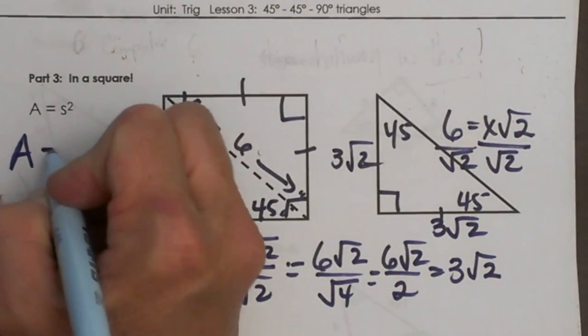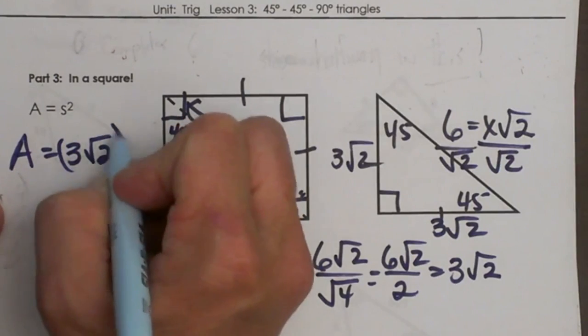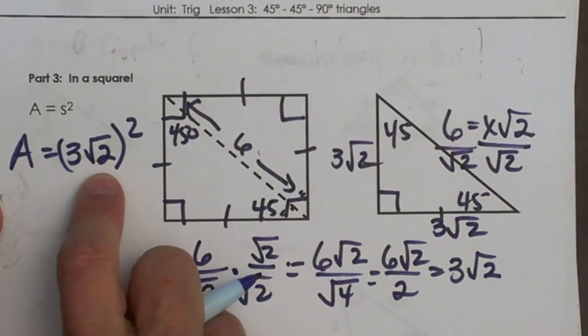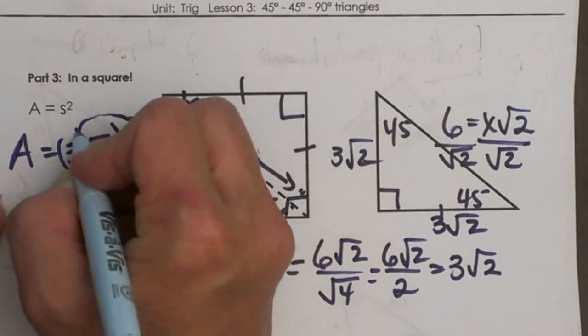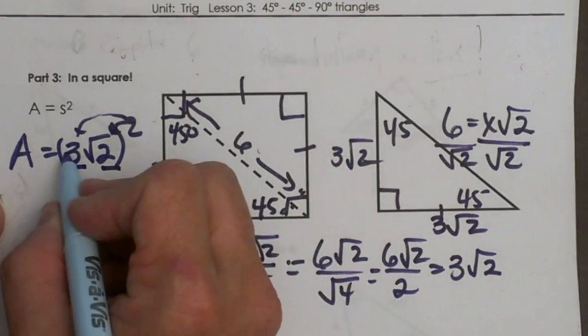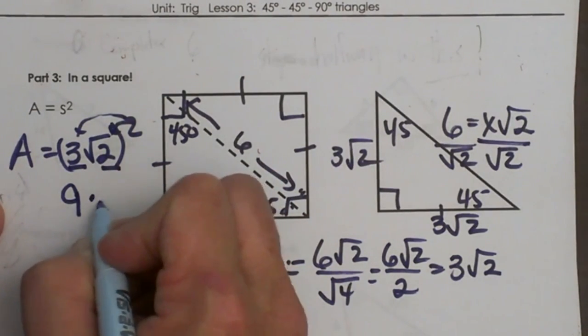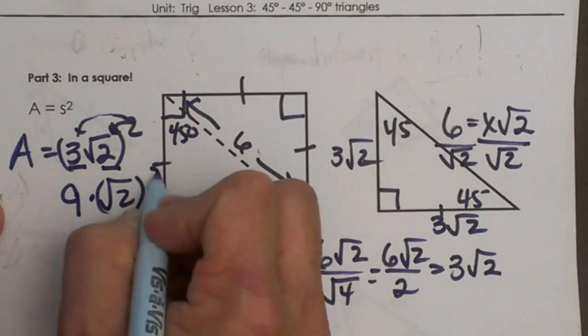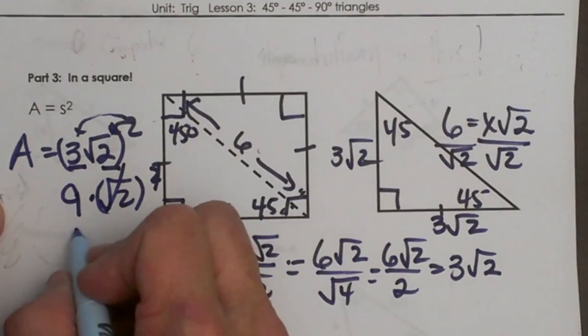To find the area I take 3√2 and I am going to square the whole thing not just squaring the square root but also squaring the 3. So you have to kind of distribute. We have to square the 3 and square the √2. So 3 squared is 9 and the square root of 2 squared that just cancels out so you are going to get the square root of 4 which is just 2.